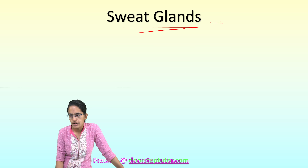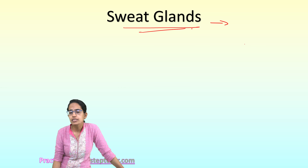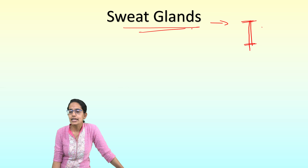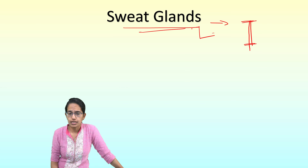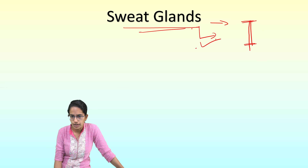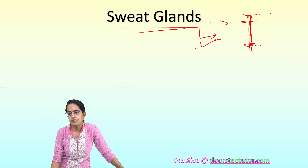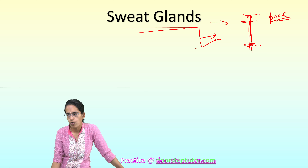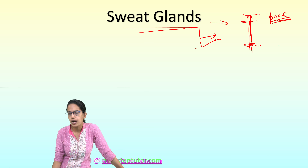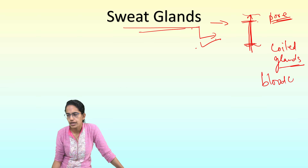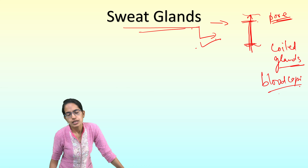Sweat glands are tubular pouchings that originate in the dermis but come out through the epidermis; they are derived from the Malpighian layer. They are present in the dermis, emerge in the epidermis, and on the surface are revealed as pores. The distal part is coiled and glandular in nature, and also has numerous blood capillaries.